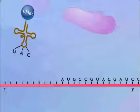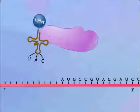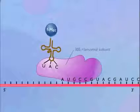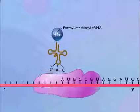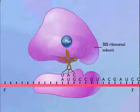In prokaryotic cells, translation is initiated by formation of an initiation complex consisting of the 30S ribosomal subunit, formyl-methionyl tRNA, and messenger RNA. The 50S ribosomal subunit then joins the complex.